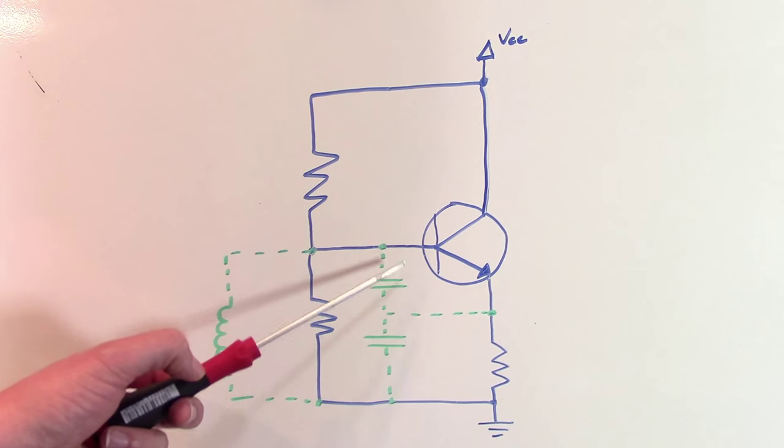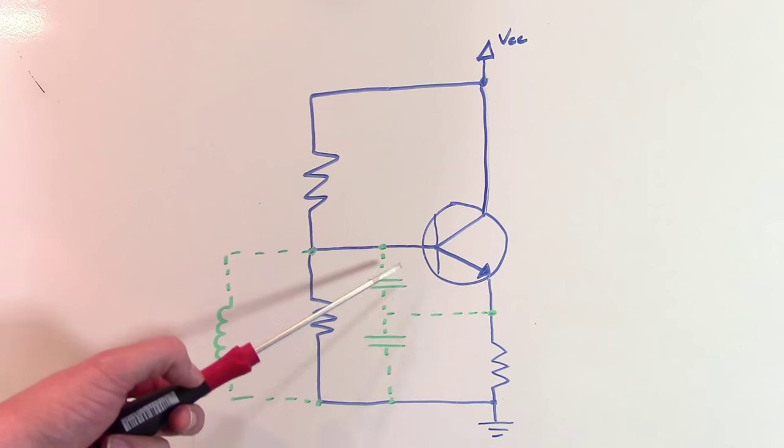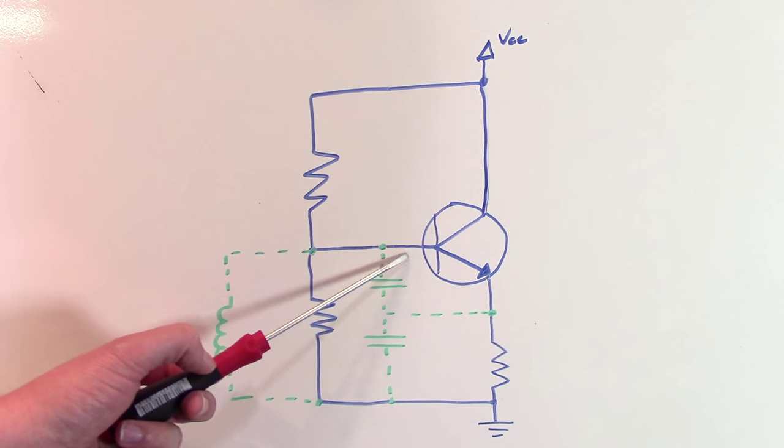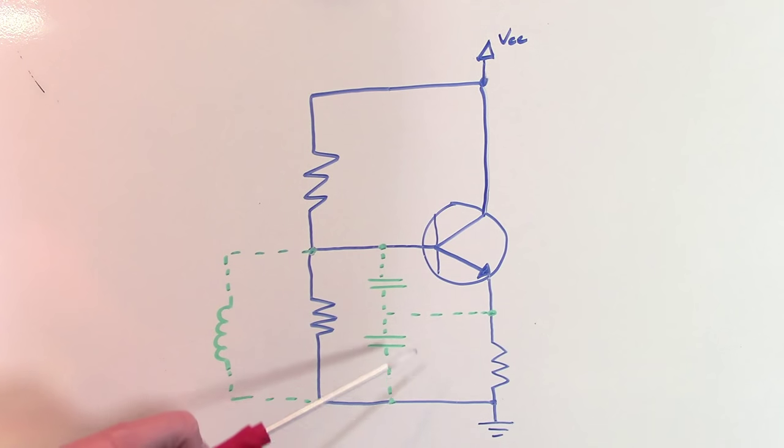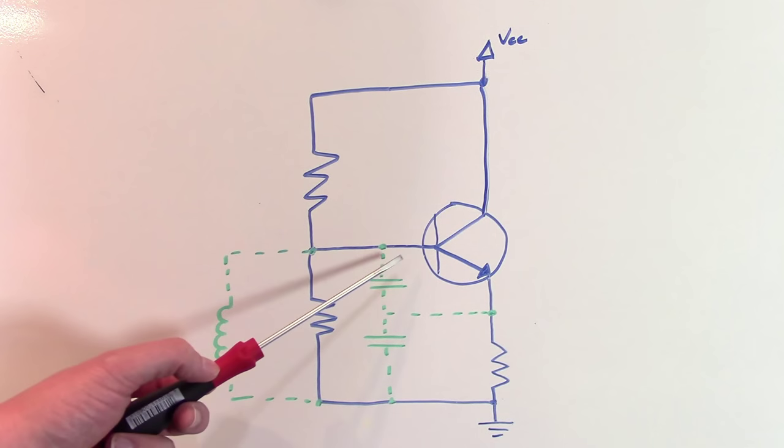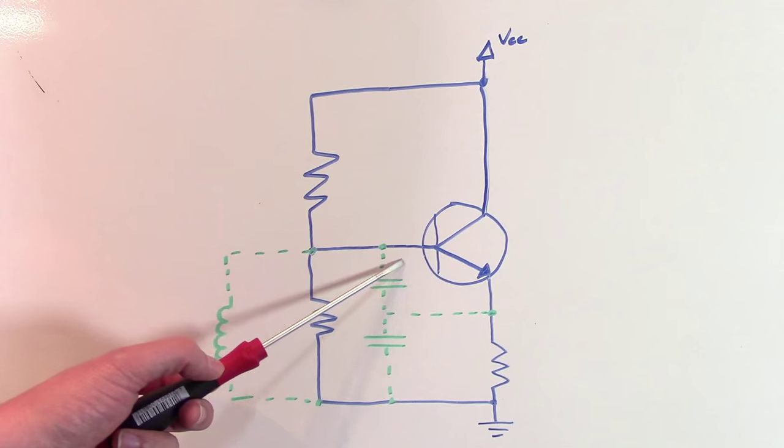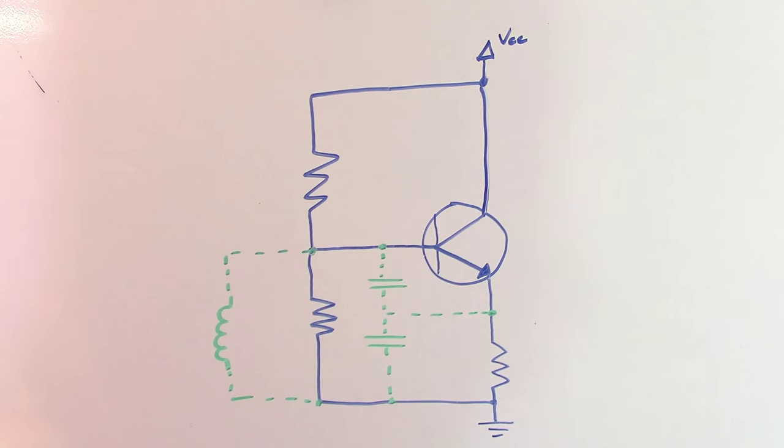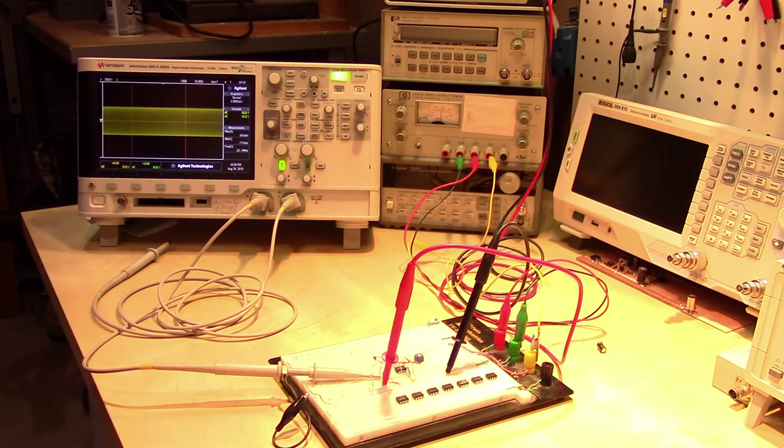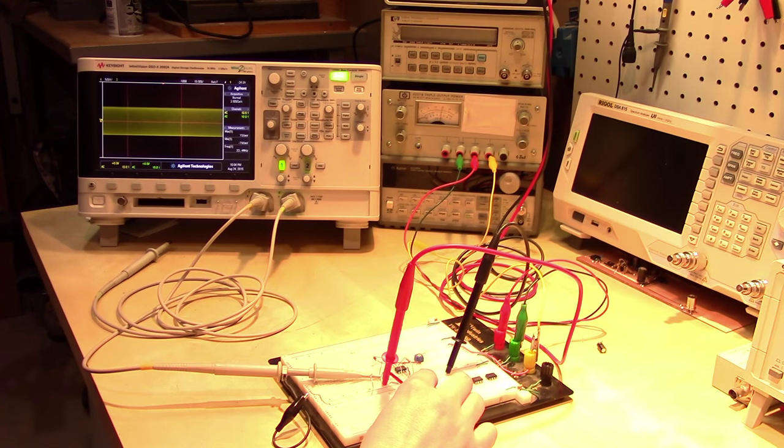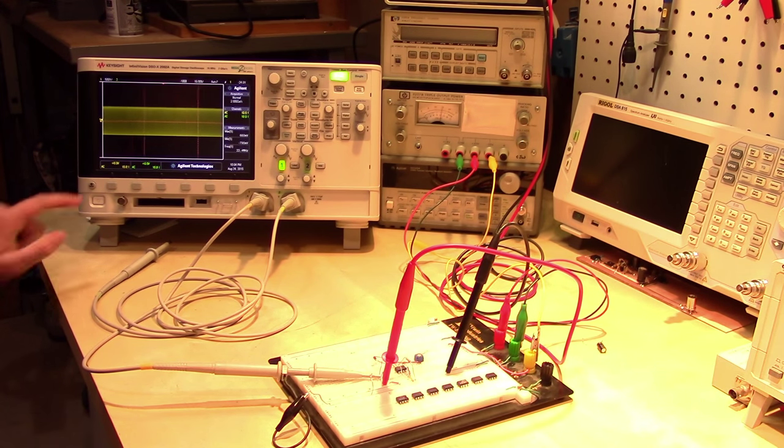The advantage that the resistor has over the capacitor is that the resistor is relatively frequency independent, whereas the capacitor obviously is going to have some frequency dependent impedance. So, typically you'll see a resistor used in order to quell these oscillations. So how much resistance do we need to add in series with the base of our transistor in order to stop these oscillations? Well, one of the criteria for oscillation, known as the Barkhausen criteria, is that the total loop gain needs to be greater than or equal to 1.